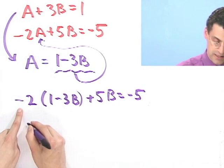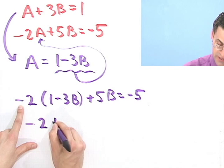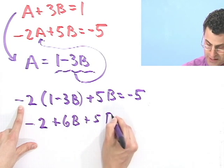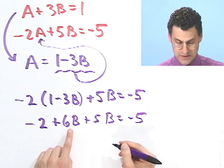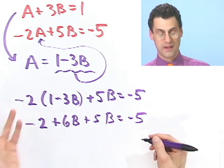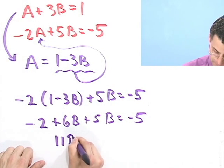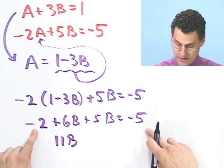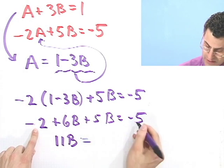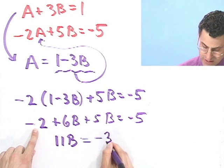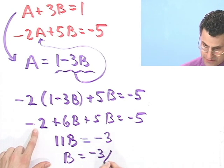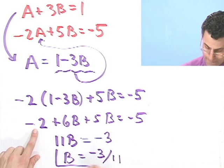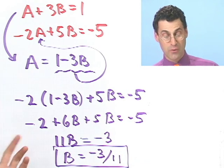So if I distribute, I see minus 2 plus 6b plus 5b equals minus 5. And so 6b plus 5b, that's like about 11b. If I take that negative 2 and bring it over here, it pops over as a positive 2. But I've got a minus 5, so that's a minus 3. And so I see that b equals minus 3 elevenths.